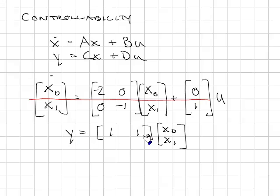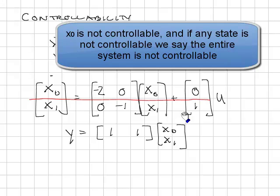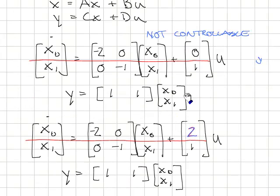The output, however, is affected by state 0 and state 1. It's the combination of the two. So in this system, we would say that the states are not controllable. No matter what we do to u, we can't affect what happens to x0. So we would say that this system is not controllable.